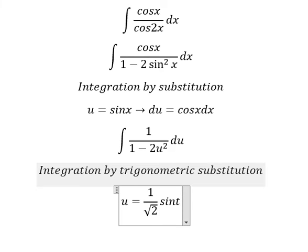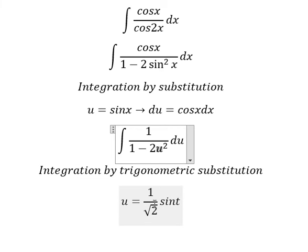Because if we put this one in here, we have 1 over 2 sin t squared. Number 2 simplifies with number 2. 1 minus sin t squared we change for cos squared t, and later we simplify by du.